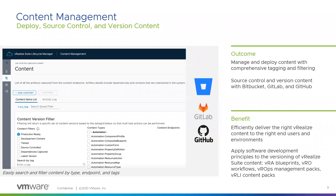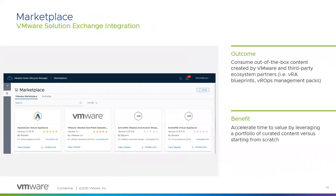One thing I didn't mention about content management is that Bitbucket, GitLab, and GitHub are supported — GitHub as of 8.1. What you can do is not only pull content out of a test environment and push it into production, but you can also version-control through one of these code repositories. This is especially important if you have multiple people working on it, and it's also a good way to have the data in another location for disaster recovery purposes.